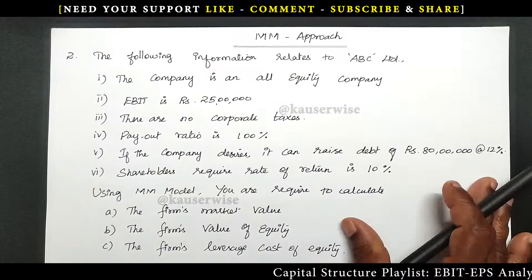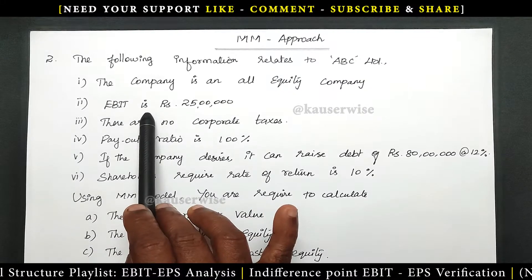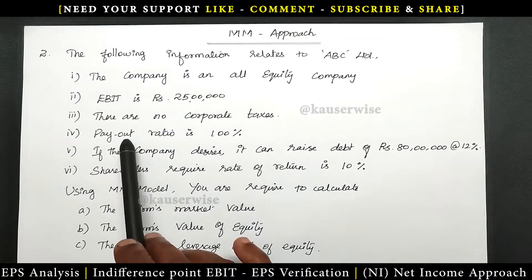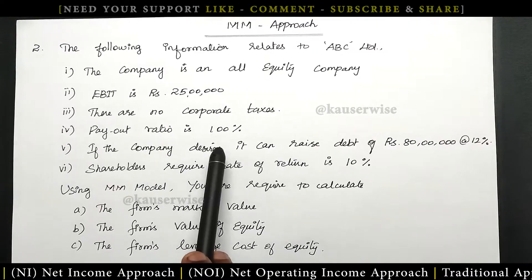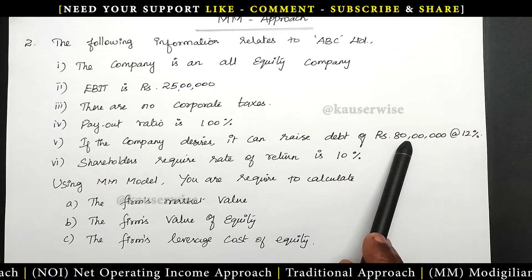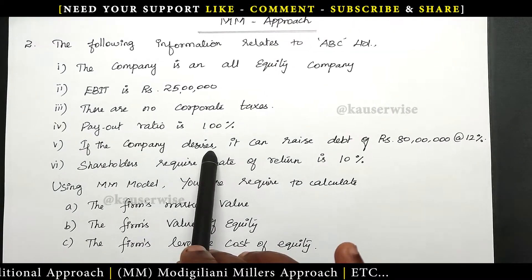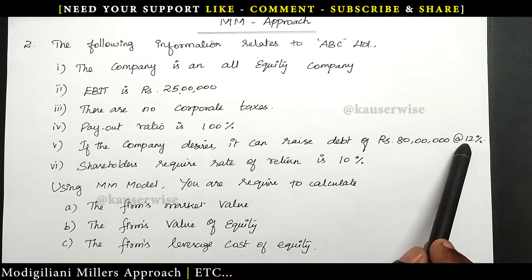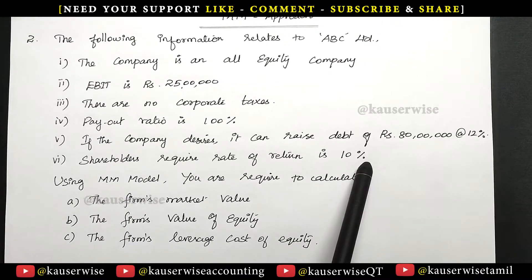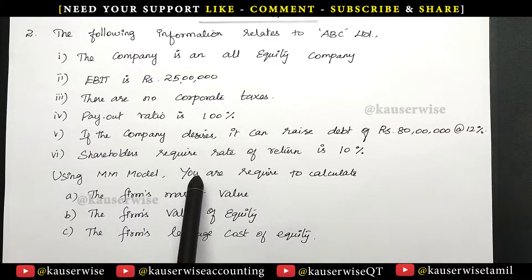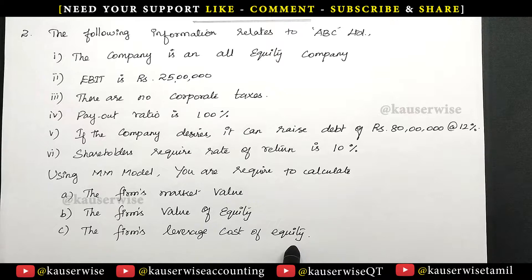Now let's see the second problem. The following information relates to ABC Limited. The company is an all-equity company and EBIT is 25 lakhs. There are no corporate taxes and payout is 100% — whatever profit, everything is declared as dividend. If the company desires, it can raise debt of rupees 80 lakhs at 12% interest. Shareholders' required rate of return is 10%, which is the cost of equity. Using the MM model, we are required to calculate: the firm's market value, the firm's value of equity, and the firm's leveraged cost of equity.